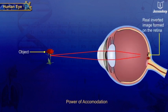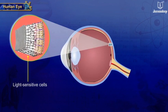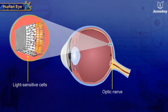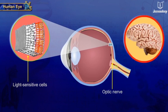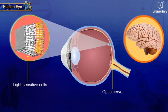A real, inverted image is formed on the retina. The light-sensitive cells get activated on illumination and electrical signals are generated. These signals are passed by the optic nerves to the brain. The brain interprets these signals and processes the information so that we perceive the object as it is.